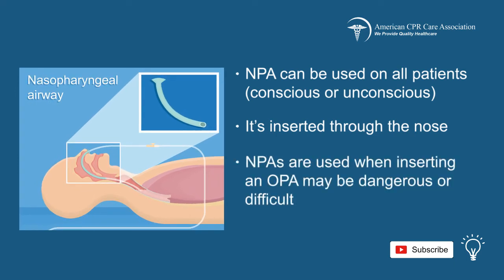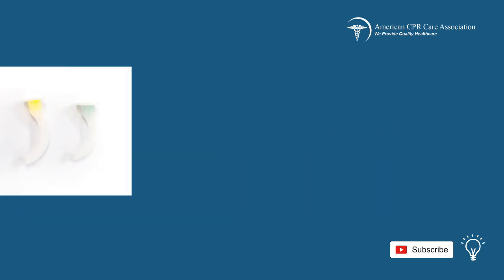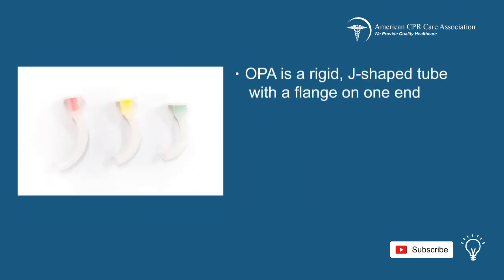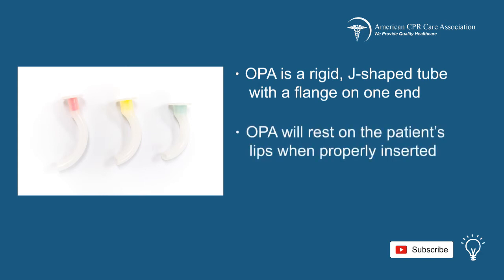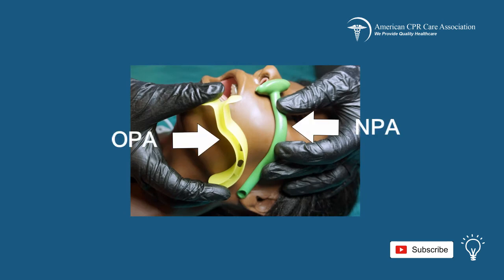NPAs are normally used when inserting an OPA might be dangerous or difficult. The OPA is a rigid J-shaped tube with a flange on one end, meant to rest on the patient's lips when properly inserted. The NPA is usually made of soft rubber or plastic.